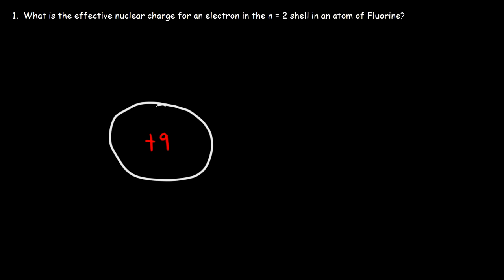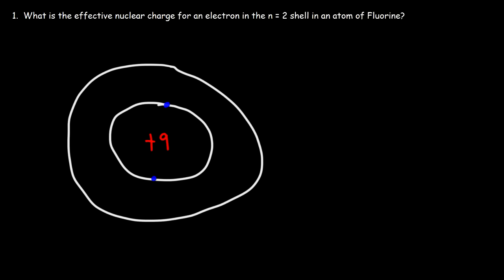In the first energy level there are two electrons — these are known as core electrons. In the second energy level of fluorine there are 7. Keep in mind, atoms have equal numbers of protons and electrons. So fluorine has 9 protons and 9 electrons; the first shell holds 2, so the second shell has 7, because 2 plus 7 is 9.